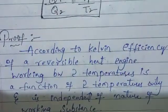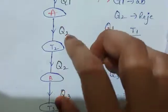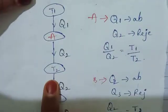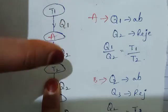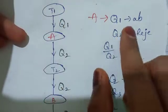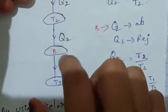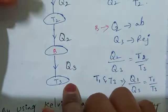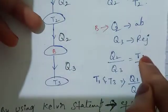So now let us present the proof. We consider two reversible Carnot engines — engine A and engine B. Engine A works between temperatures T1 and T2, absorbs Q1 amount of energy and rejects Q2 amount of energy. So Q1 by Q2 is equal to T1 by T2 for engine A. Engine B absorbs Q2 and rejects Q3, working between T2 and T3, so Q2 by Q3 is equal to T2 by T3.